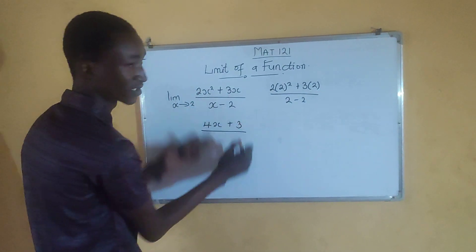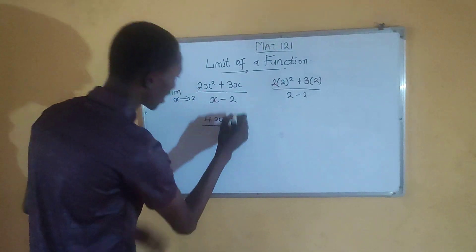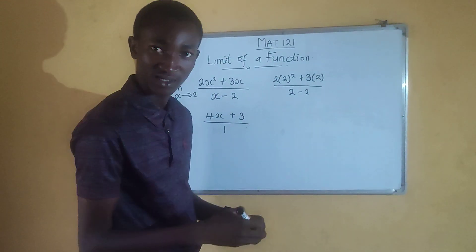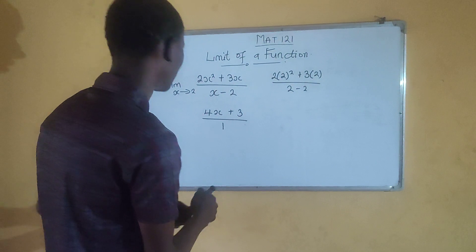Then you differentiate the denominator. When you differentiate x, you have 1, and when you differentiate minus 2, which is a constant, you have 0. So we did it like this.